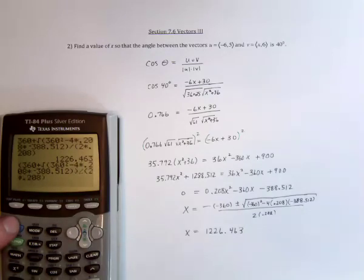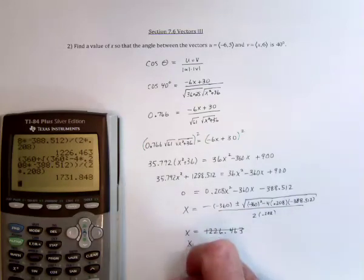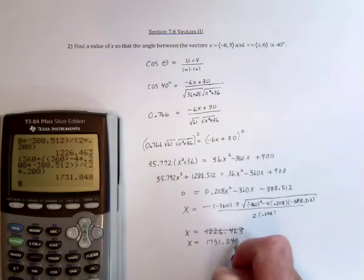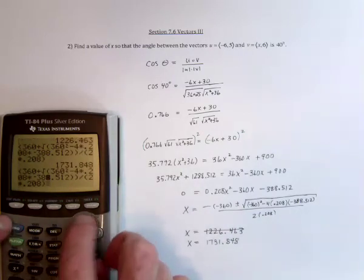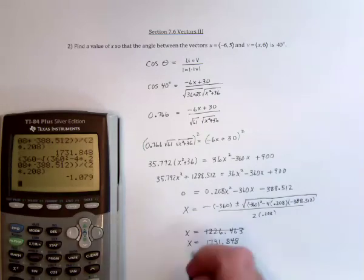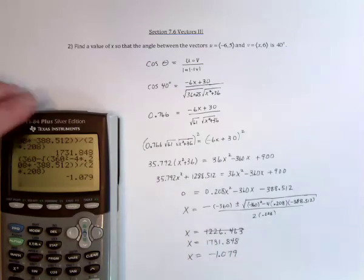Insert a parenthesis there. Insert a parenthesis. Well, it's even larger. x is equal to 1731.848. And then do the same thing with subtracting. And x is equal to negative 1.079, which sounds a lot more reasonable.